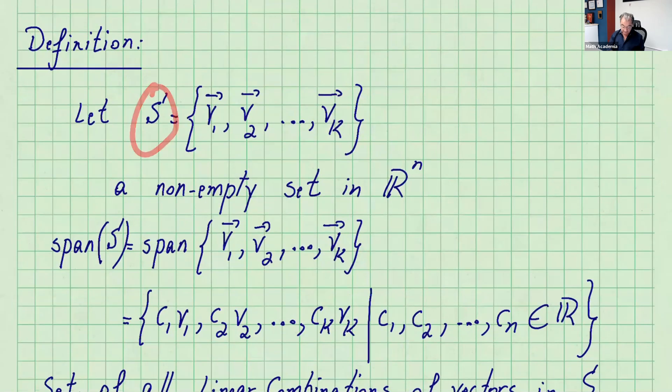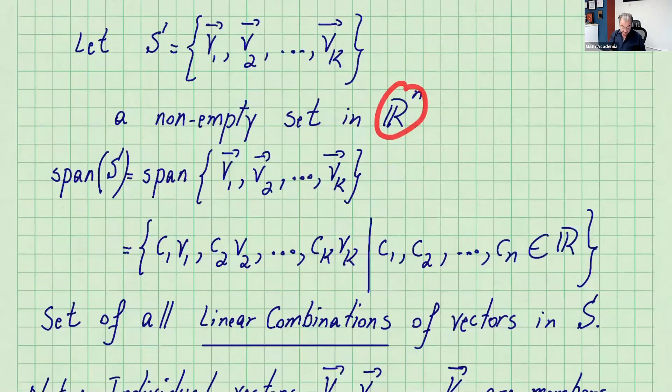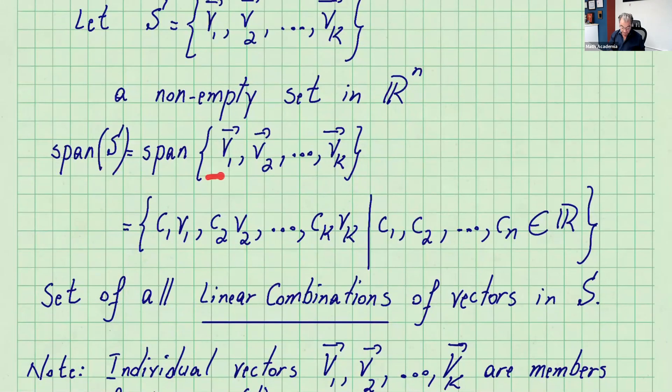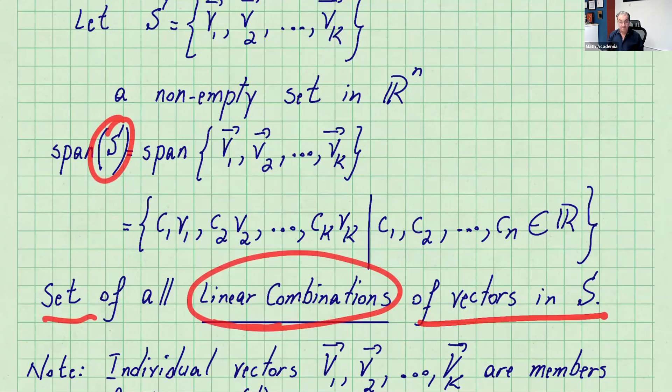Let's start with the definition. We have a set of vectors v1, v2, ..., vk, a non-empty set in Rn. The span of S is written as span of those vectors, which equals c1v1 + c2v2 + ... + ckvk where the c's are real numbers. The span of S is the set of all linear combinations of the vectors in S.